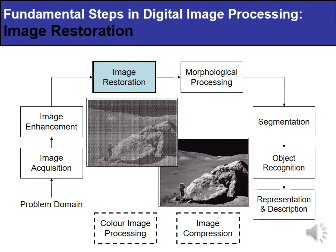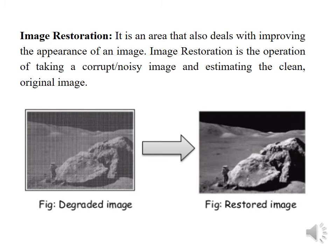Next is image restoration. It is the process of recovering an image that has been degraded by some degradation function and additive noise term. It is completely objective in nature. The input image undergoes image restoration and at the output you can see a clearer image from which analysis is easy. It is the operation of taking a corrupt or noisy image and estimating the clean or original image.